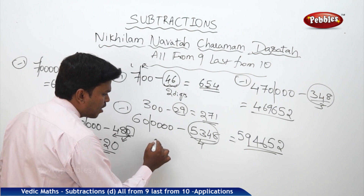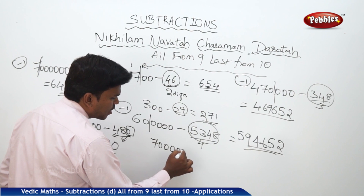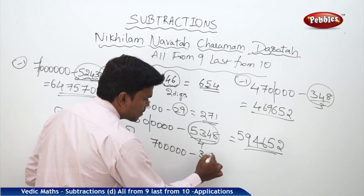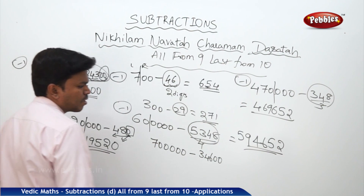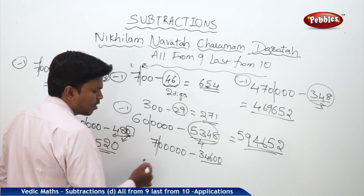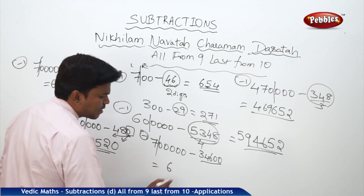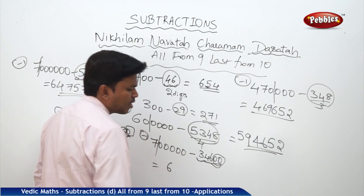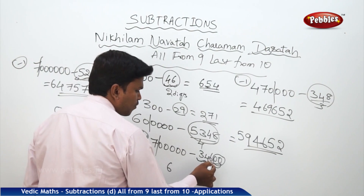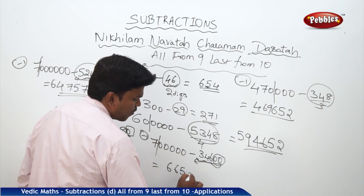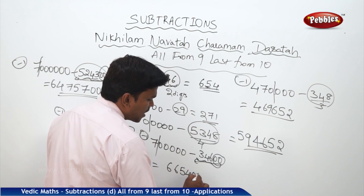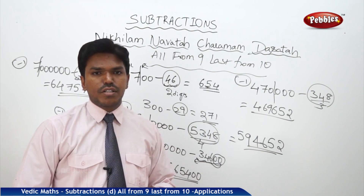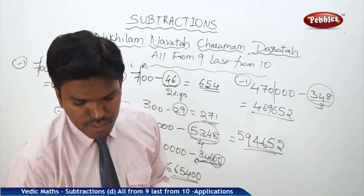Last example in this method: 7,00,000 minus 34,600. Five digits: 1, 2, 3, 4, 5. The left part 7 becomes 6. For the remaining part, ignore the last two zeros and apply 'all from nine, last from ten' to 346: you get 6, 5, 4. Now drop the two zeros back. So the answer is 6,65,400 — that is six lakhs sixty-five thousand four hundred.